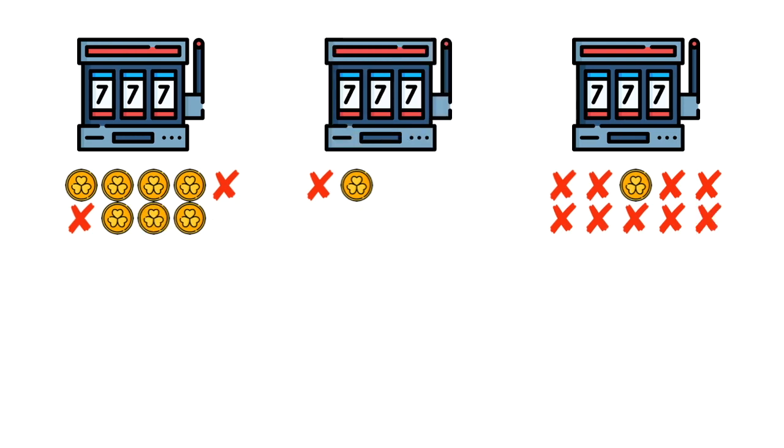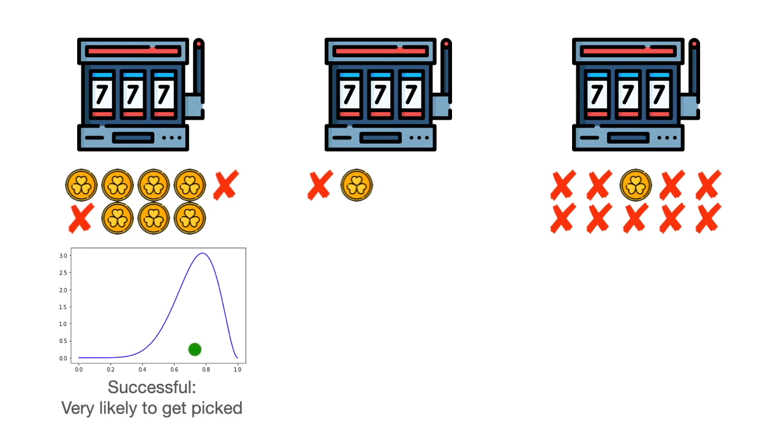Now, why is this technique good? Well, let's look at three different machines. The one on the left has proven to be pretty successful because it has good results. Its beta distribution is heavily skewed towards the right. Therefore, if we pick a random point in the distribution, it's likely to be a high value. So a successful distribution is likely to win at the competition and likely to get picked.